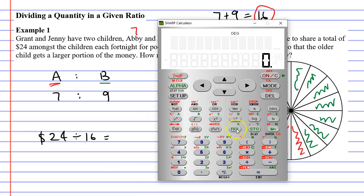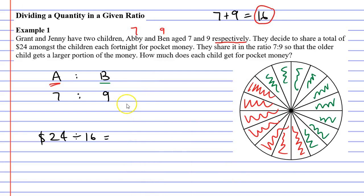Let's bring up our calculator. $24 divided by 16 equals $1.50. That means each slice of pizza is worth $1.50.